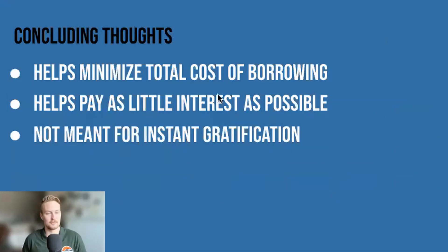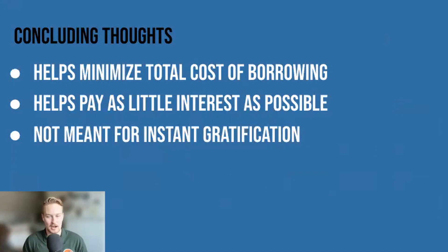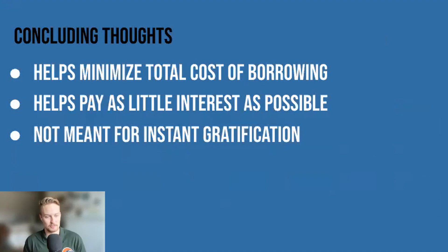Some concluding thoughts on the Avalanche strategy: one, it's going to help minimize the total cost of borrowing. Two, it helps you pay as little interest as possible — and since we know how compound growth works, that's very valuable to us. Keep in mind, you won't have the instant gratification of seeing a loan paid off quickly. You're tackling the big, high-interest-rate debts first. This isn't a strategy made for instant gratification — it's big moves only. Next, we're going to talk about the Snowball strategy.